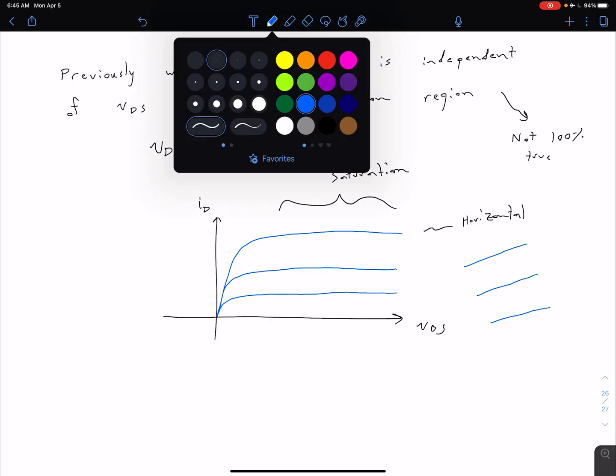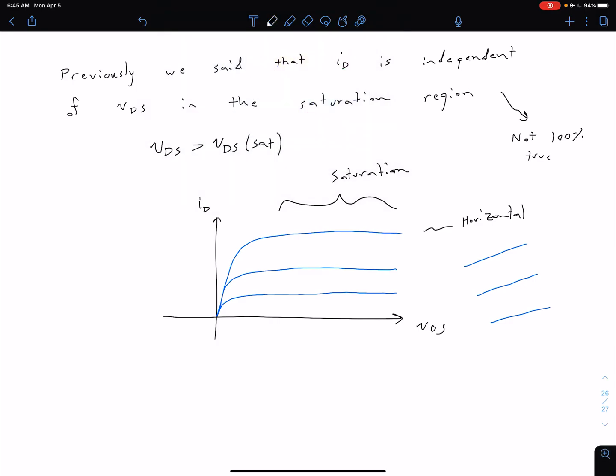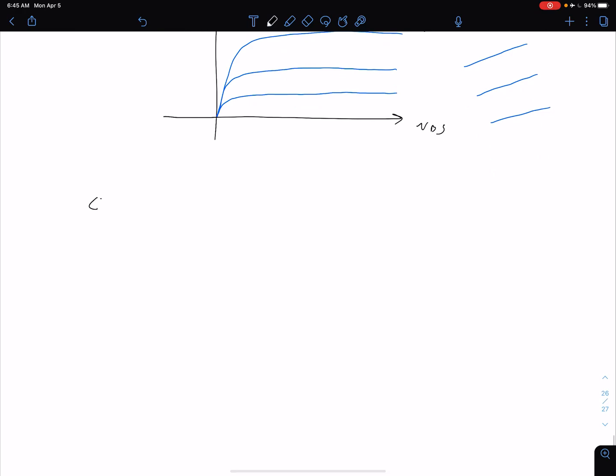The reason for this is due to an effect called channel length modulation. Let's sort of step through what's going on and why that is going to change the relationship between our drain current and our drain to source voltage when we're in saturation.